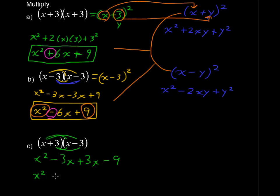So after you do a couple of these, you'll start to recognize the pattern that the middle term, or that x term, is going to drop out. The x squared term sticks around, but that middle term drops out.